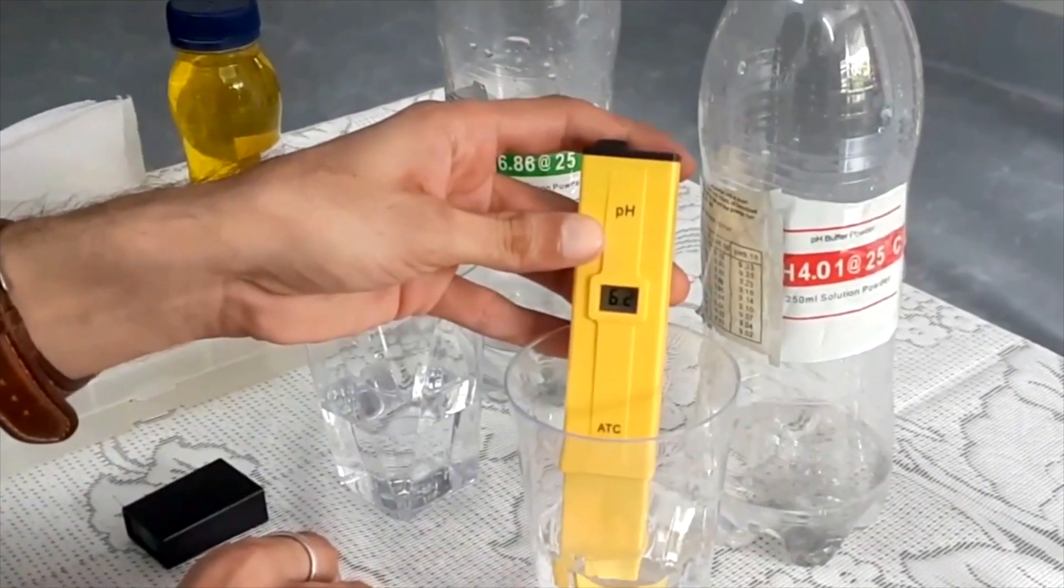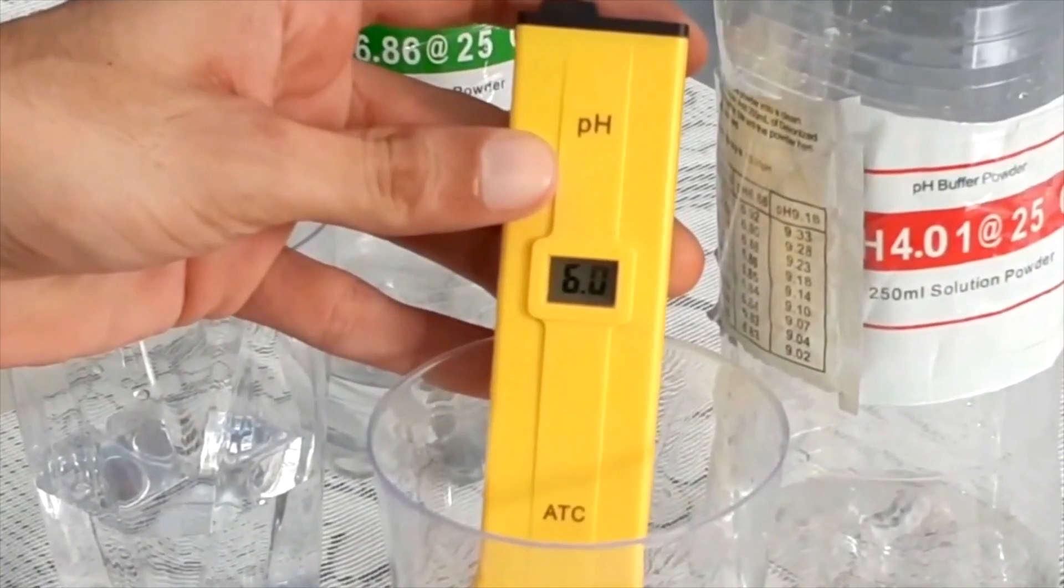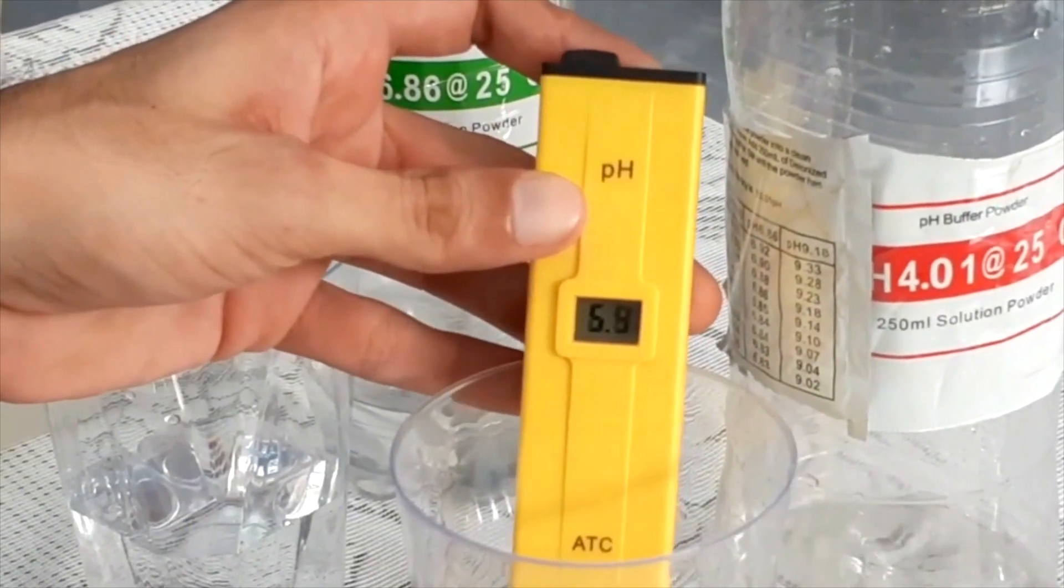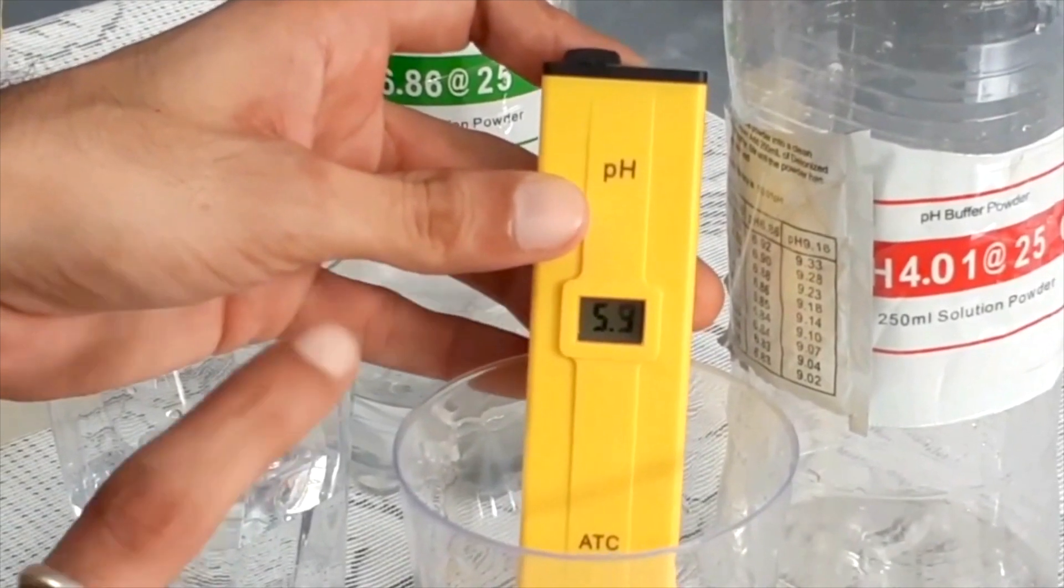We will dip the meter in the first buffer solution. It's showing 5.9 after a few seconds.